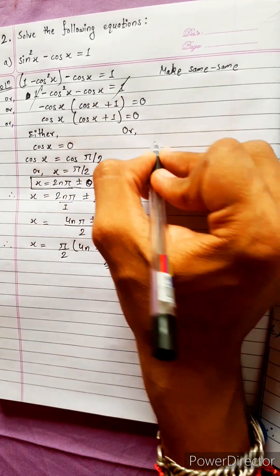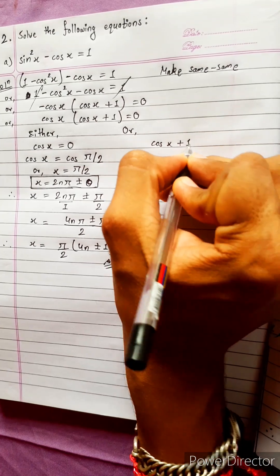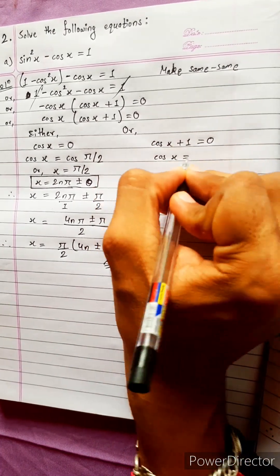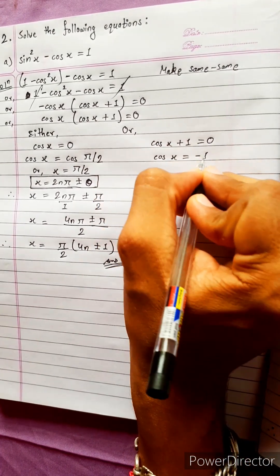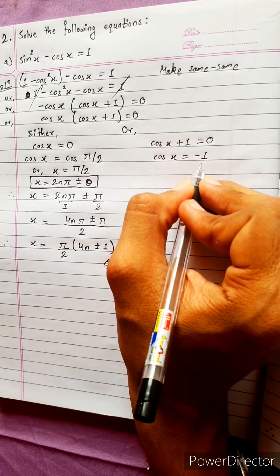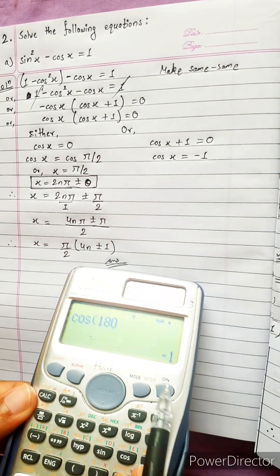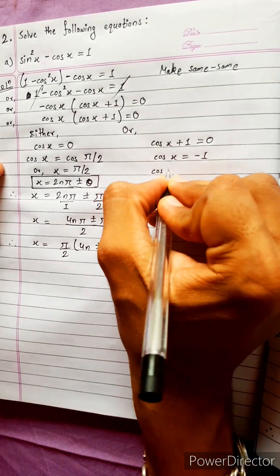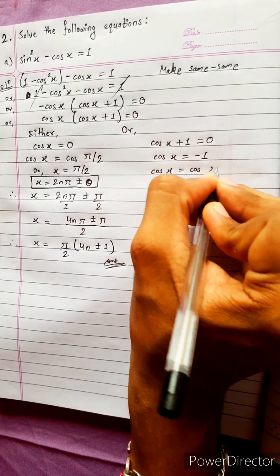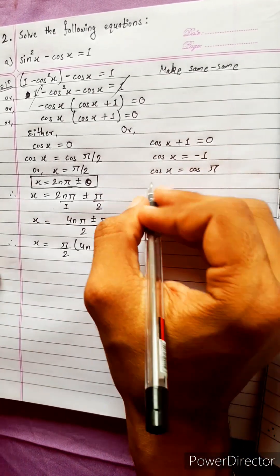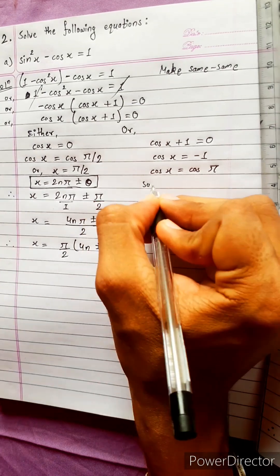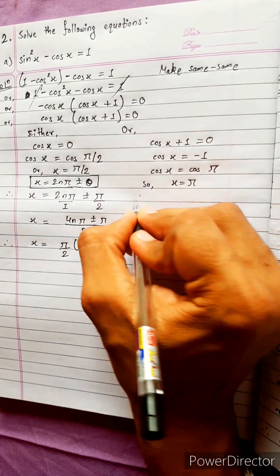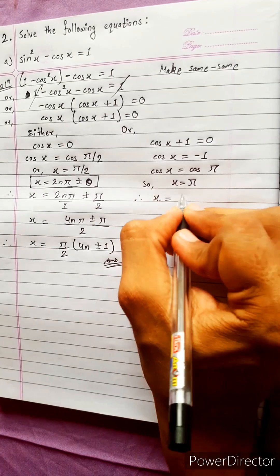Or: cos x plus 1 equals 0, so cos x equals minus 1. Minus 1 is a special case. Cos 180° equals minus 1, so cos x equals cos 180°, meaning x equals pi.